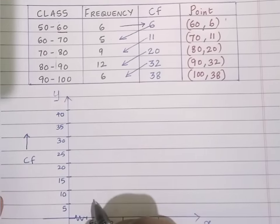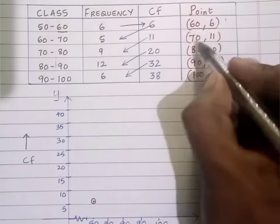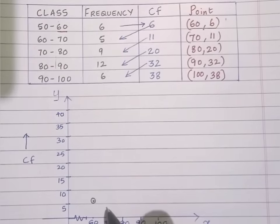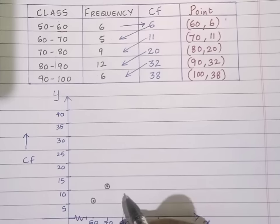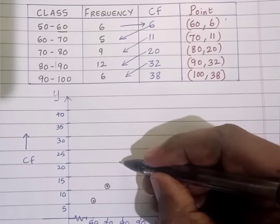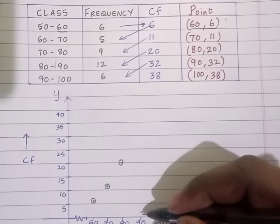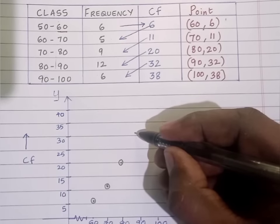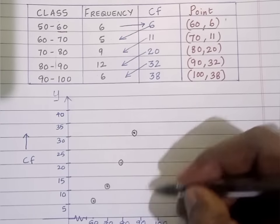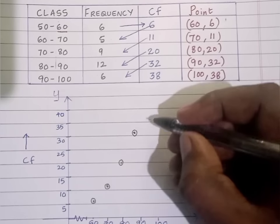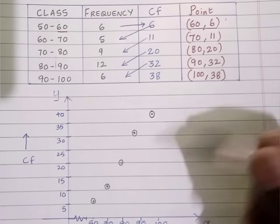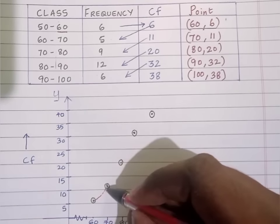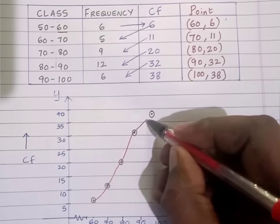Now I will plot the points. For X=60, Y is 6. For X=70, Y is 11. For X=80, Y is 20. For X=90, Y is 32 — it is between 30 and 35. For X=100, Y is 38 — it is between 35 and 40. Now I will join these points freehand without using the scale.